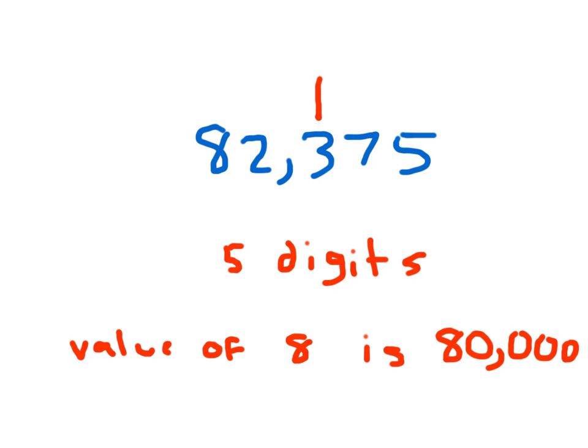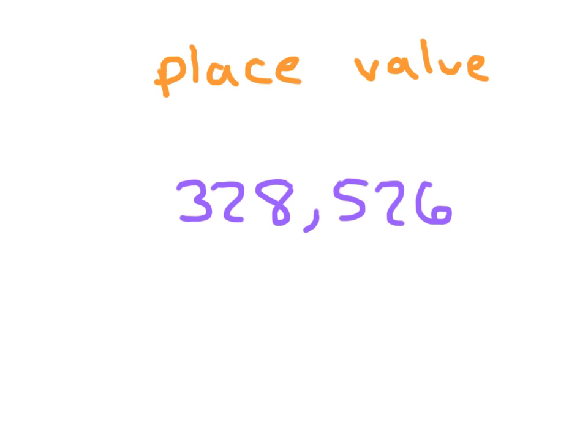What would the value of this 3 be? The value is 300. This number is 328,526, where there are 1, 2, 3, 4, 5, 6 digits. There are different values for each of these numbers.